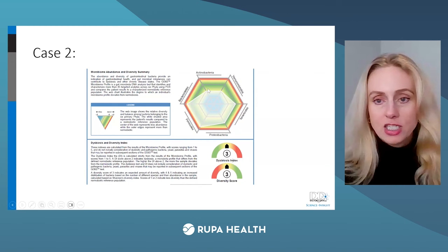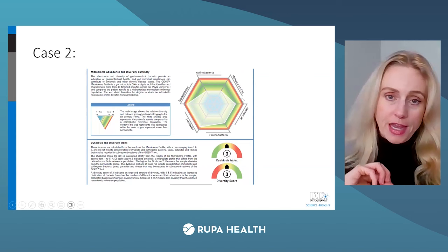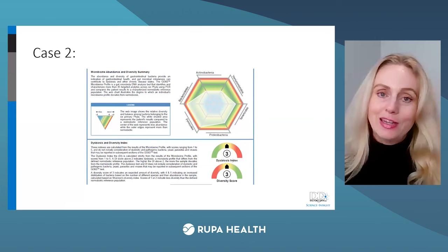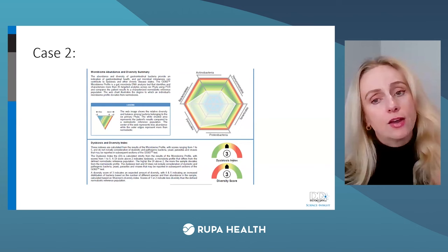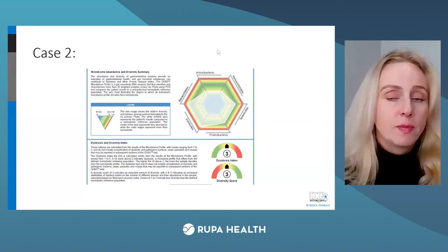Looking at her GI 360, we see a different web. Actinobacteria is lower — again, vegetables. Verrucomicrobia is lower. One important bacterium within Verrucomicrobia I think about is Akkermansia muciniphila, a very popular bacteria. With the patient mentioning intestinal permeability, Akkermansia plays a significant role in mucosal barrier integrity. Dysbiosis is 3, diversity is 3 — moderate. I'm thinking about vegetable consumption and polyphenols right off the bat.